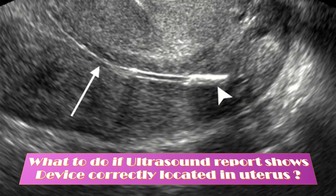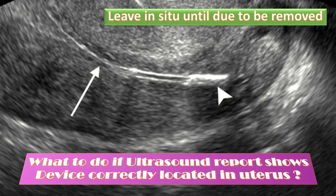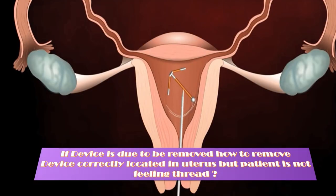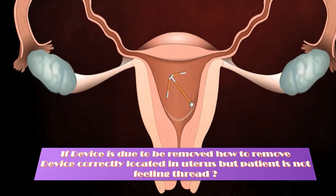If the ultrasound report shows the device correctly located in the uterus, leave it in situ until it is due to be removed. If the device is due for removal but the patient is not feeling the thread, explore the cervical canal with a narrow artery forcep. If the procedure is not offered in primary care or the attempt is unsuccessful, refer to the contraception and sexual health clinic by letter with the scan results.